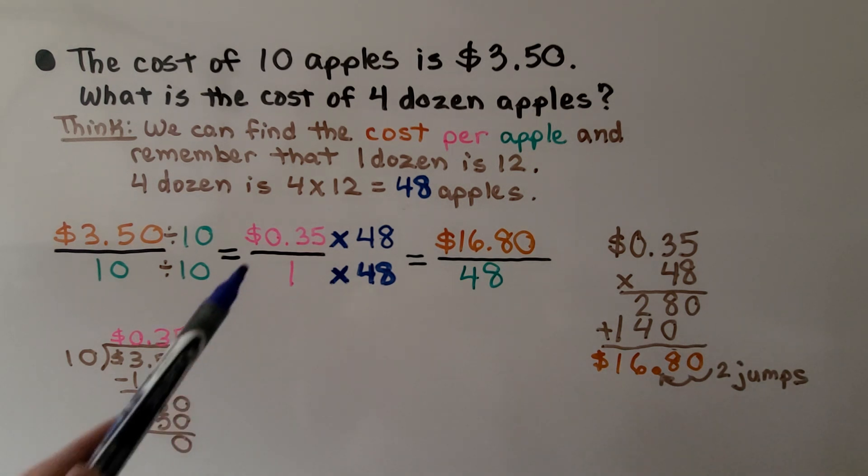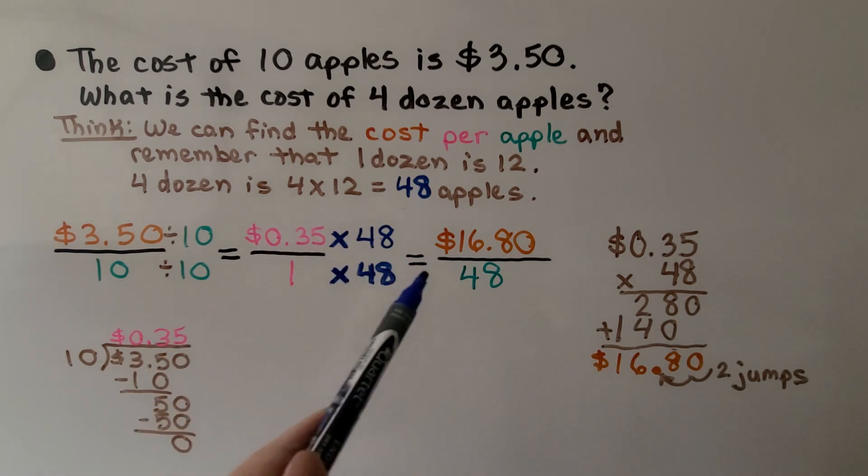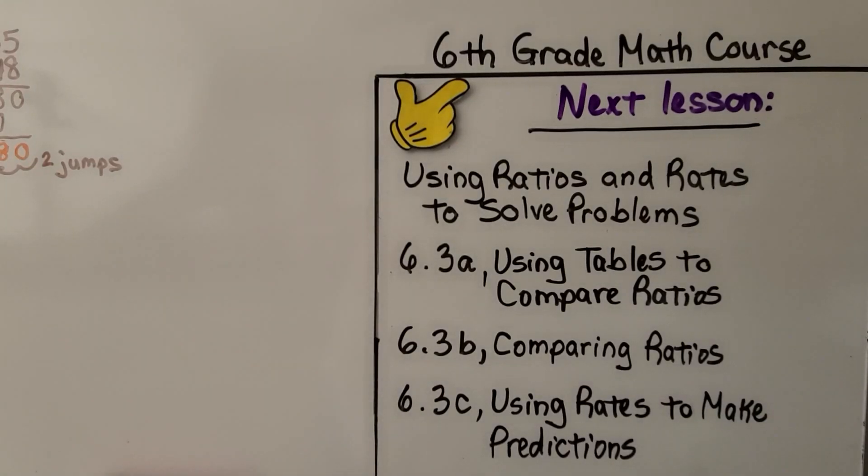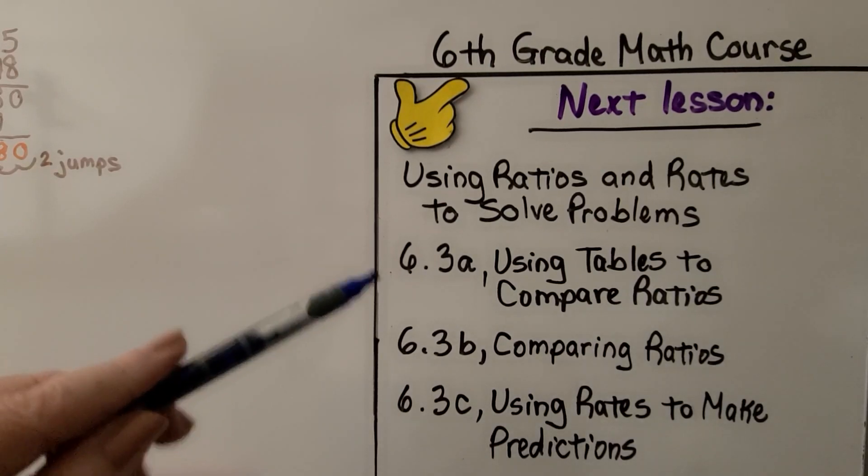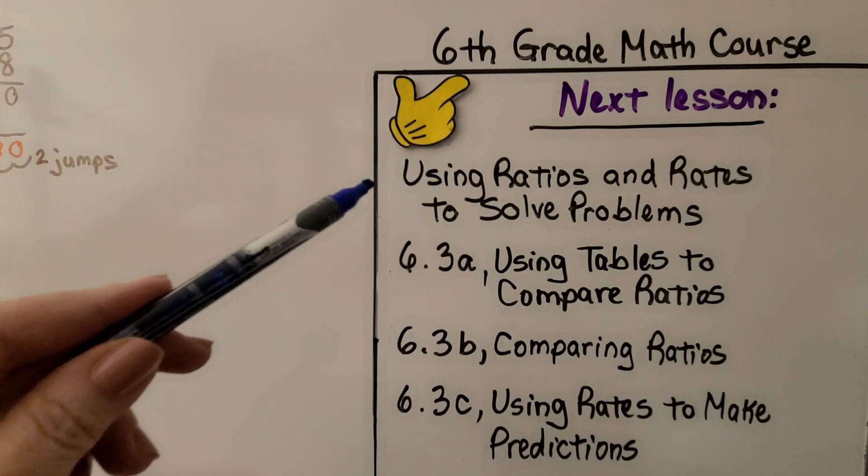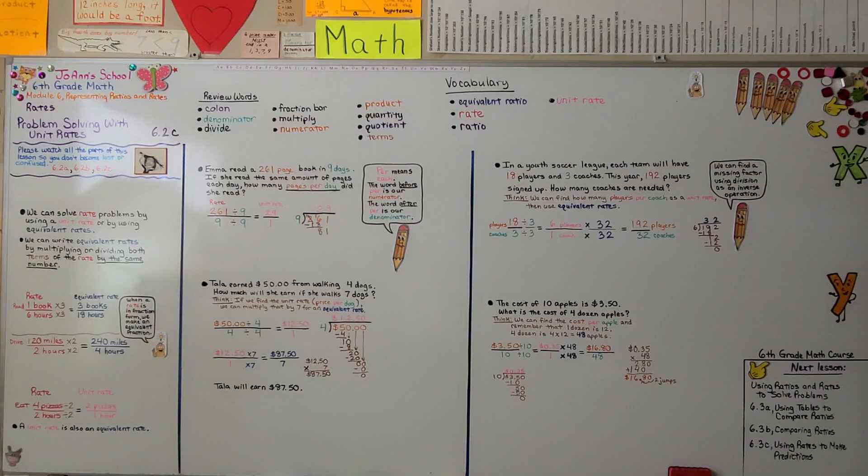Find the unit price first, then multiply it by the number that we need to get that amount. We're moving on to the next lesson, 6.3, which is broken up into three smaller lessons. We're going to be learning about using ratios and rates to solve problems. Have a really nice day, and I'll see you next time. Bye!